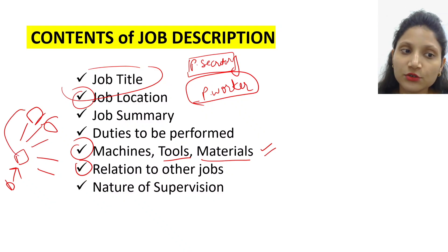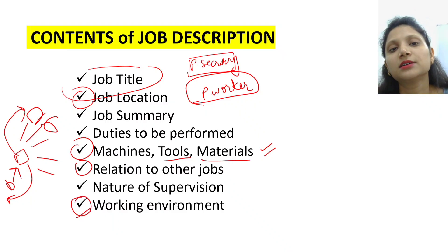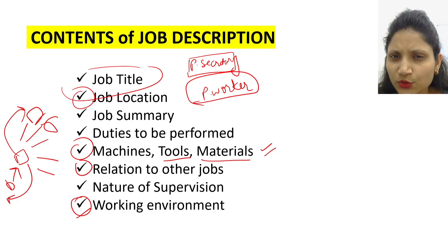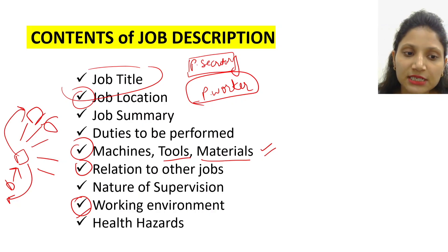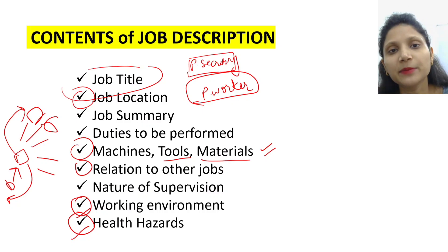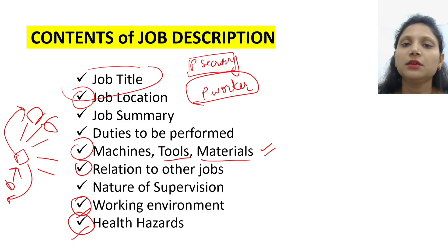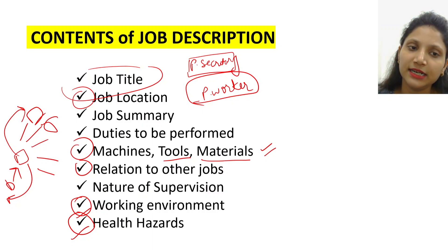Iske alawa supervision — woh kisko supervise karayga, aur usse supervision kahan se milegi. Iske alawa working environment kaisa rahega organization ke andar ya factory ke andar — kuch hazards toh nahi hain, ya bohot zyada noisy environment toh nahi rahega, ya heated factory ka environment toh nahi raheta. Yeh sab mention karna hai. Iske alawa koi aisi practice, equipment, material ya tool jo health ke liye harmful ho — jaise factory ke andar bohot zyada dust and fumes rehne wali ho jis se lungs pe impact aa sakta hai — woh bhi job description ke andar mention karna hai.